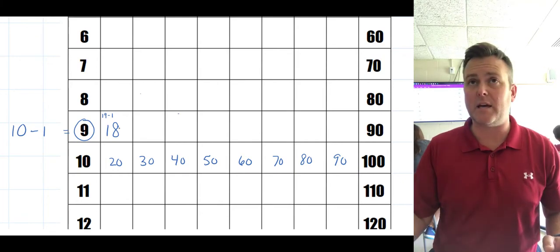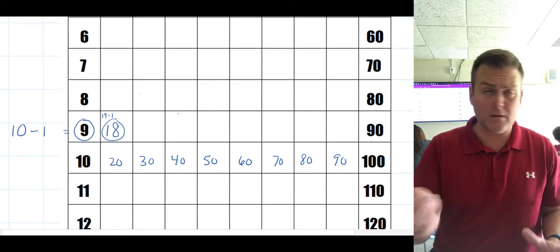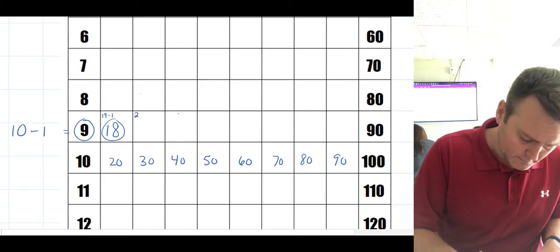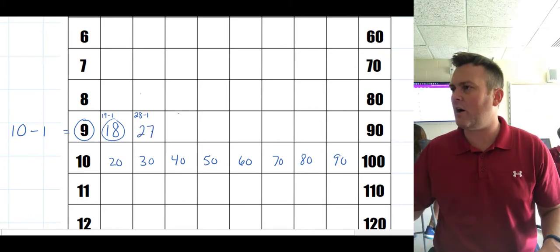And we continue the process. Let's jump again from 18—let's increase that by 10. 10 more than 18 is 28, but we've got to take one away from it so we end up with 27. Do you see how that method could help?